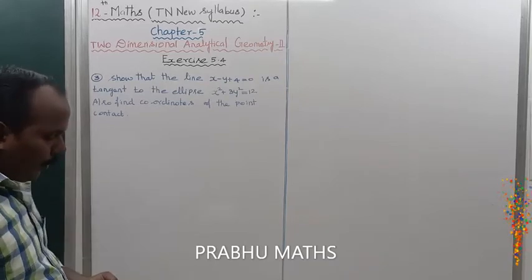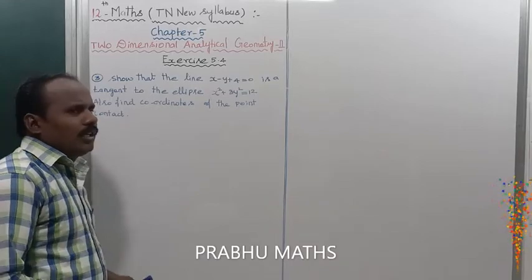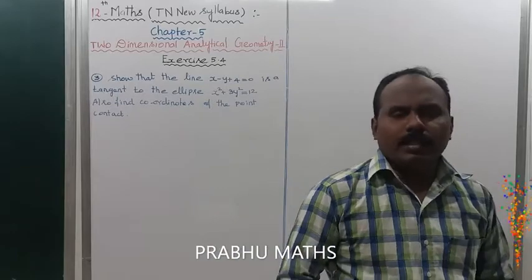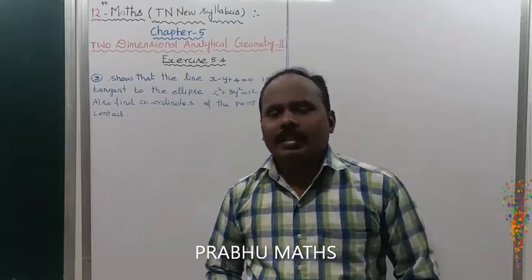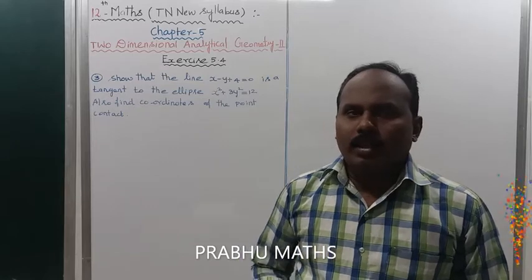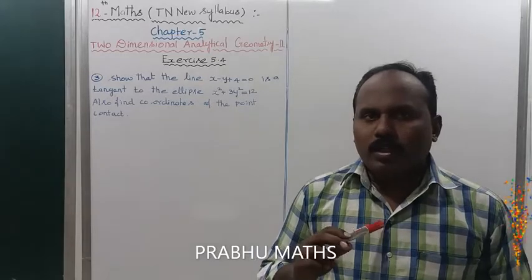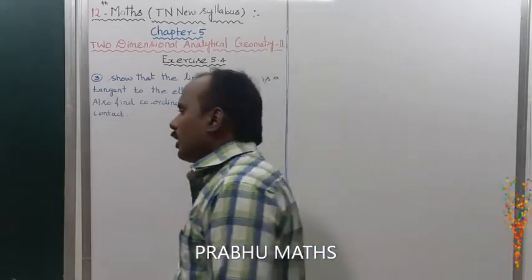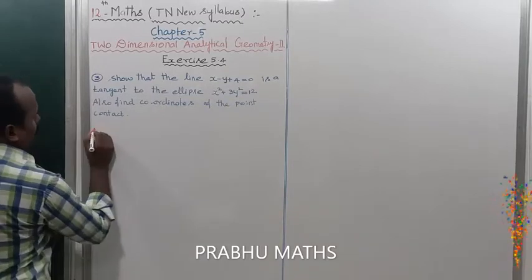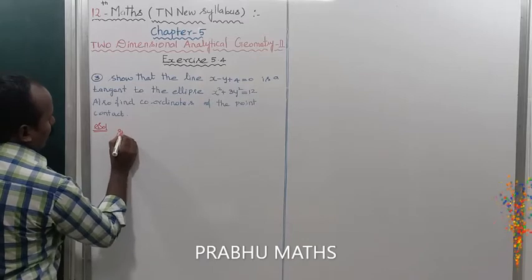First of all, the condition of the line y equal to mx plus c to be a tangent to the ellipse is: c square is equal to a square m square plus b square. That is the condition of the tangent to the ellipse.